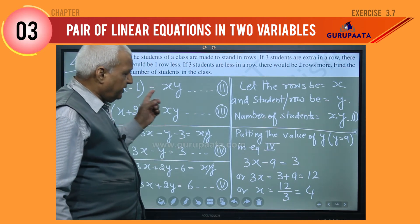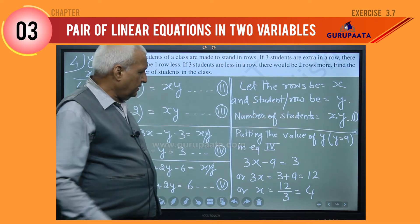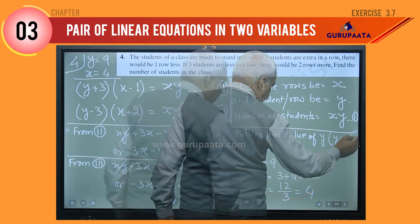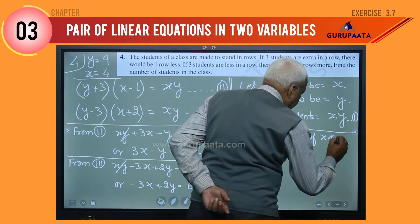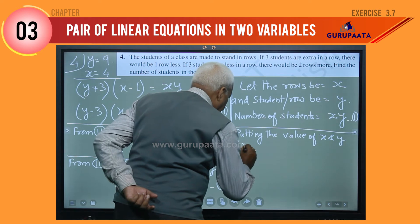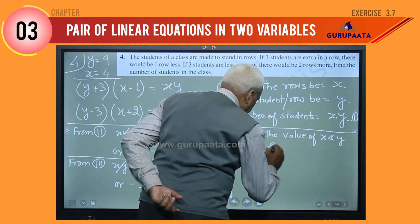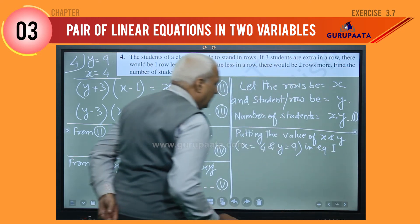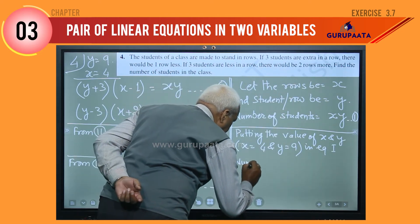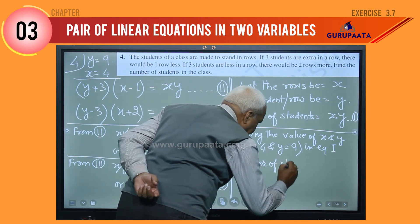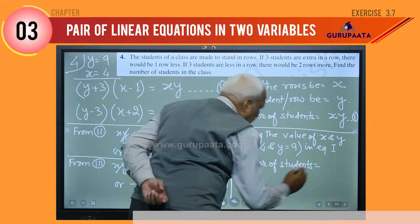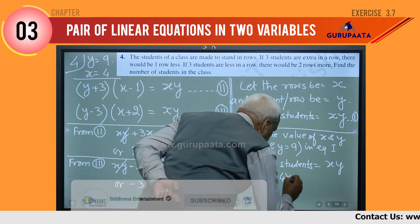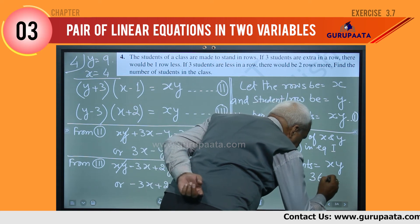Now we have to find the number of students. We will use equation number one, putting x equals 4 and y equals 9. Number of students equals x times y, that is 4 times 9, which equals 36 students.